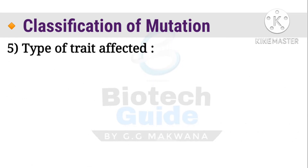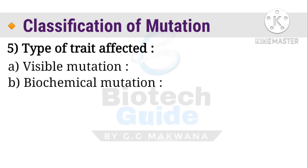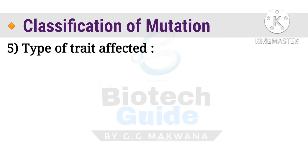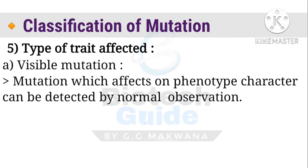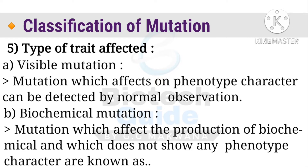The fifth classification is based on type of trait affected, with two types: visible mutation and biochemical mutation. When a mutation affects a phenotypic character detectable by normal observation, it is defined as a visible mutation. Biochemical mutation does not show any phenotypic character or cannot be detected by normal observation, but is detected due to the production of altered biochemicals.